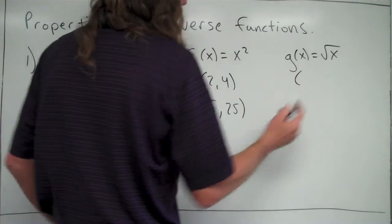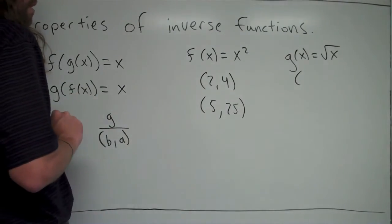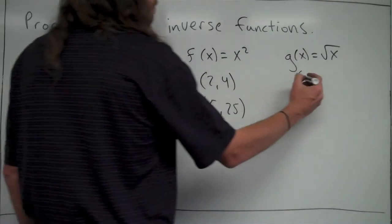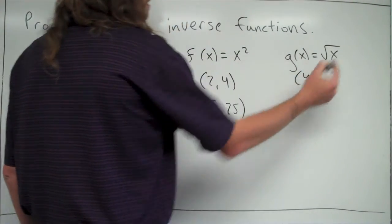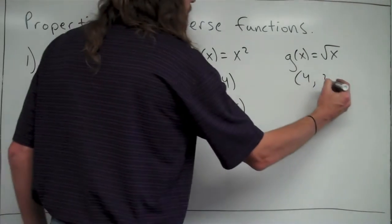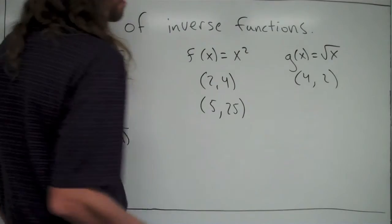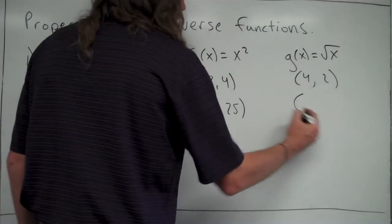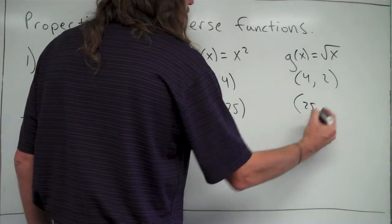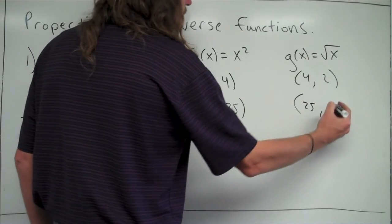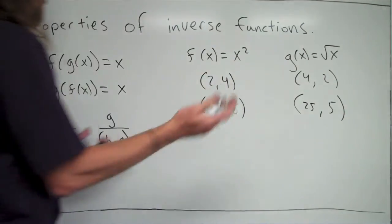So on g of x, the opposite of those should be there. So if I take 4 and plug it in, square root of 4 is equal to 2. So notice here, f of x has a point 2 comma 4, g of x then has a point 4 comma 2. If I take 25 and plug it in for x, square root of 25 is equal to 5. So same thing is true.